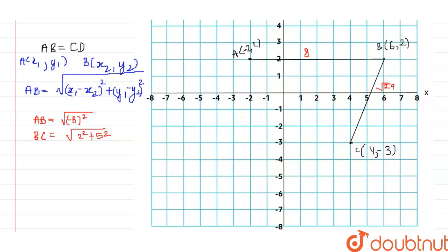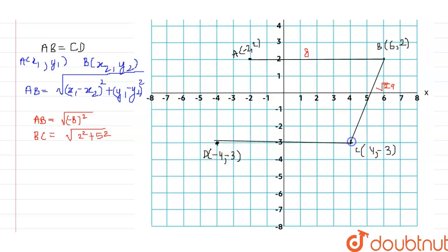We know that point D is going to be 8 units away from point C, parallel to line segment AB. Counting 8 units in that direction — 1, 2, 3, 4, 5, 6, 7, 8 — D is going to be here. The coordinates of D become x = -4 and y = -3, that is (-4, -3). We then join D with C and A with D to complete the parallelogram.